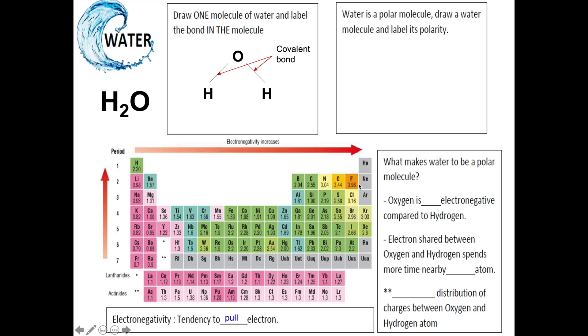Let's consider oxygen and hydrogen here. As we can see, oxygen is more electronegative compared to hydrogen. Oxygen can pull electrons more strongly compared to hydrogen.